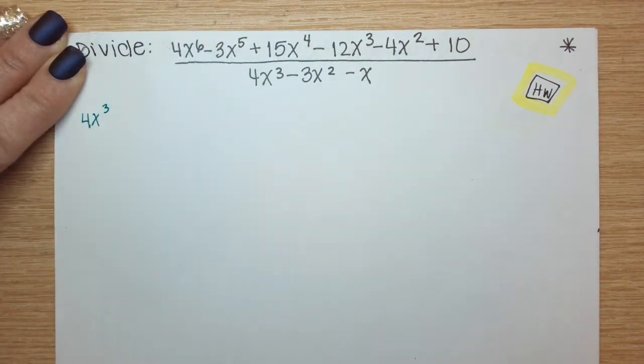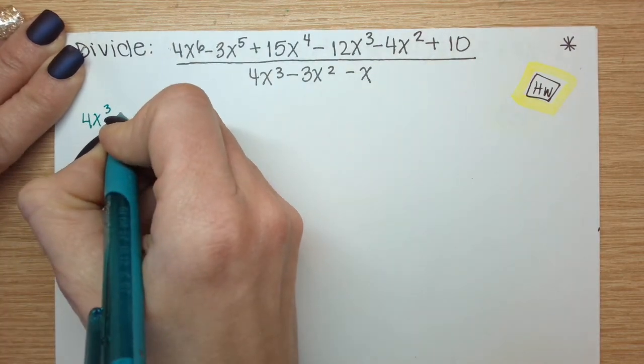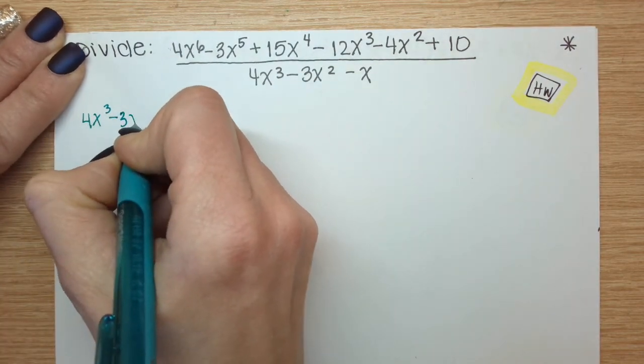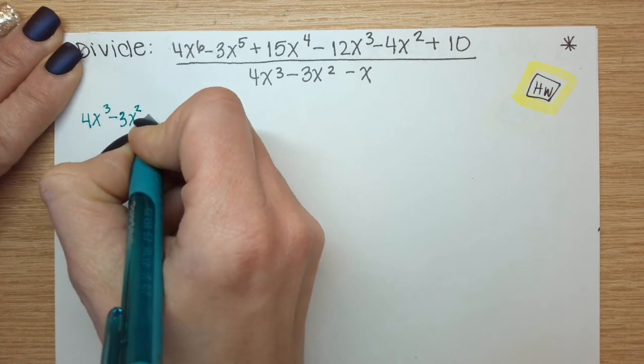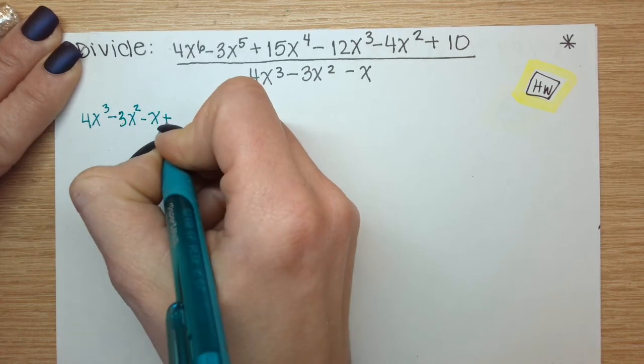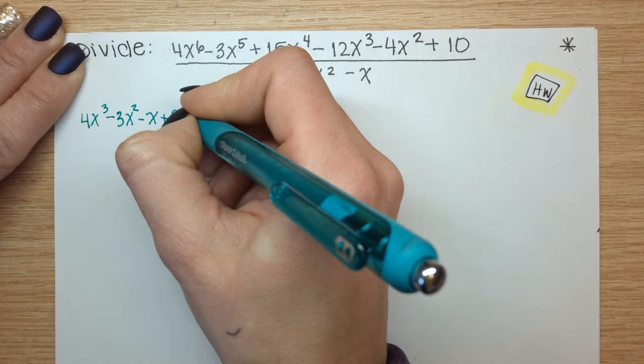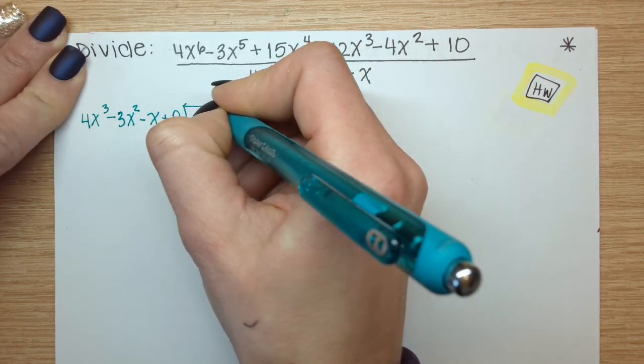My largest power is 3 and I want to account for everything after that. So there's 2, 1, and none. That's my constant term which I was missing.